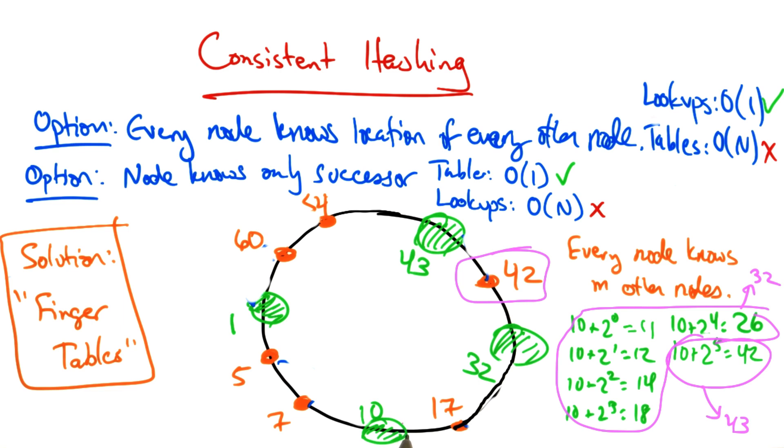So let's suppose that node 10 wanted to look up a key corresponding to the ID of 42. It can use the finger tables to find the predecessor of that node, which in this case is 32. Its finger tables have the mapping of that node's location as well. It then can ask node 32 for its successor.